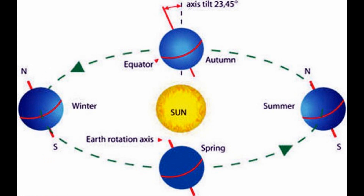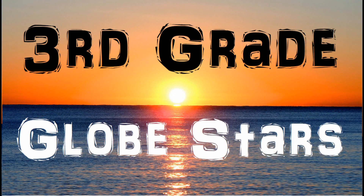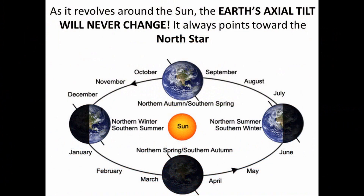Now that we understand the tilt and the way our planet moves around the sun, what has that got to do with our third grade Globestar lesson? It turns out we need that lesson to understand one simple thing: as we move around, the axis points towards the north star, or Crux in the south.